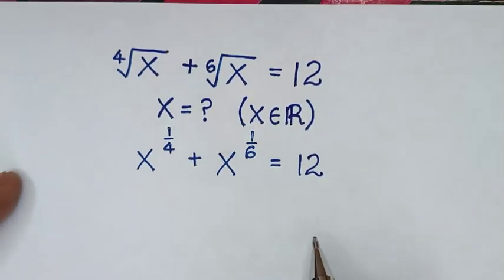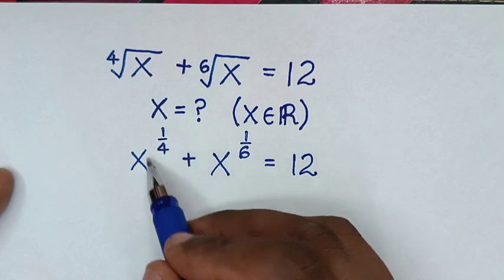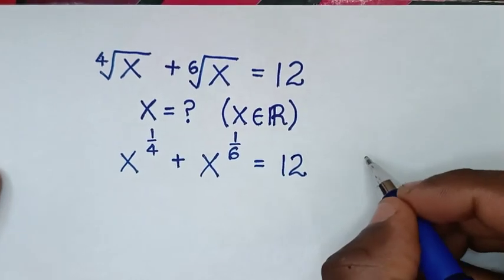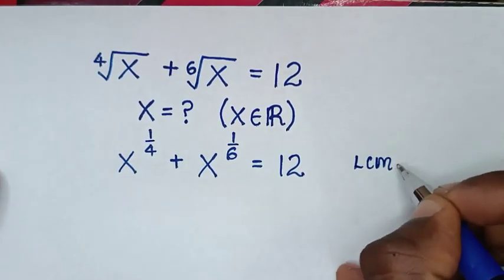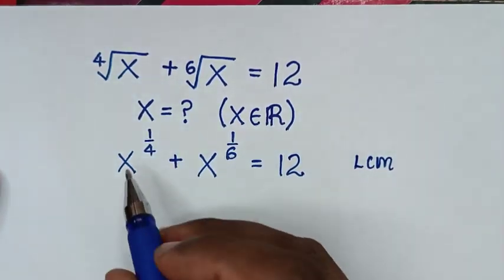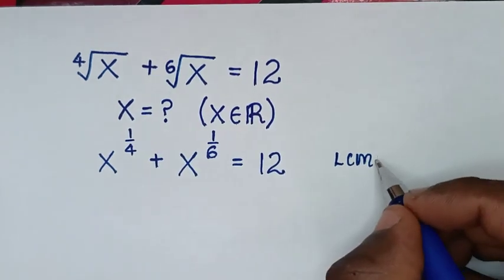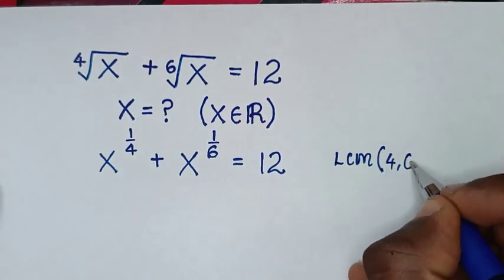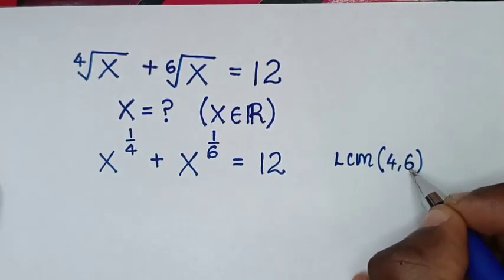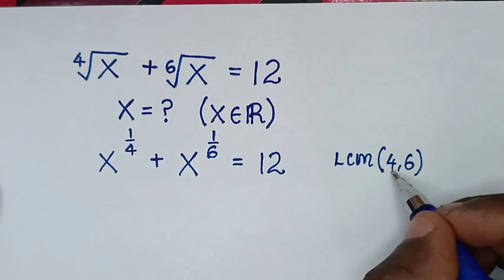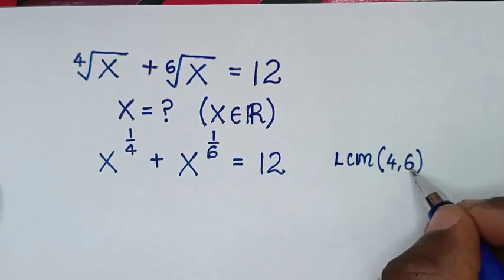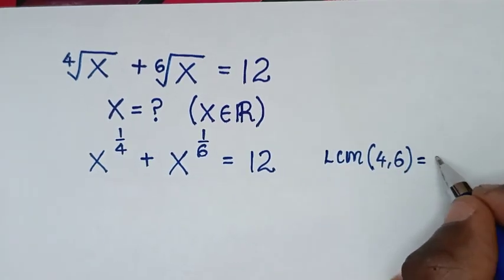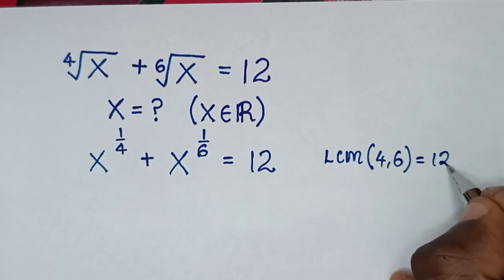In the next step, from these powers expressed as fractions, we'll find the LCM. The LCM of the denominators 4 and 6: 4 times 6 is 24, but this is divided by 2 and this is divided by 2, so 24 divided by 2 is 12. So the LCM is 12.